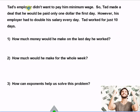Here's our word problem. Tad's employer did not want to pay him minimum wage, so Tad made a deal that he would be paid only $1 the first day. However, his employer had to double his salary every day after that. So on the first day he would get $1, on the second day $2, and so on. Tad worked for just 10 days. How much money would he make on the last day that he worked?